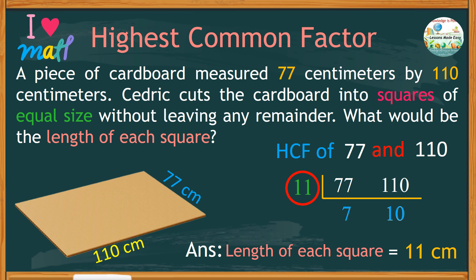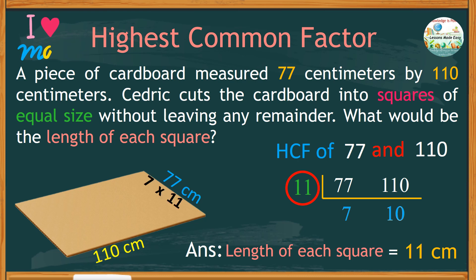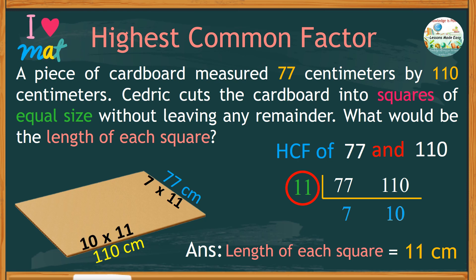It means that on the side where the length of the cardboard is 77 centimeters, you can have 7 squares that are 11 centimeters long. And on the side where the length of the cardboard is 110 centimeters, you can have 10 squares that are also 11 centimeters long. And there you have it, as easy as that.